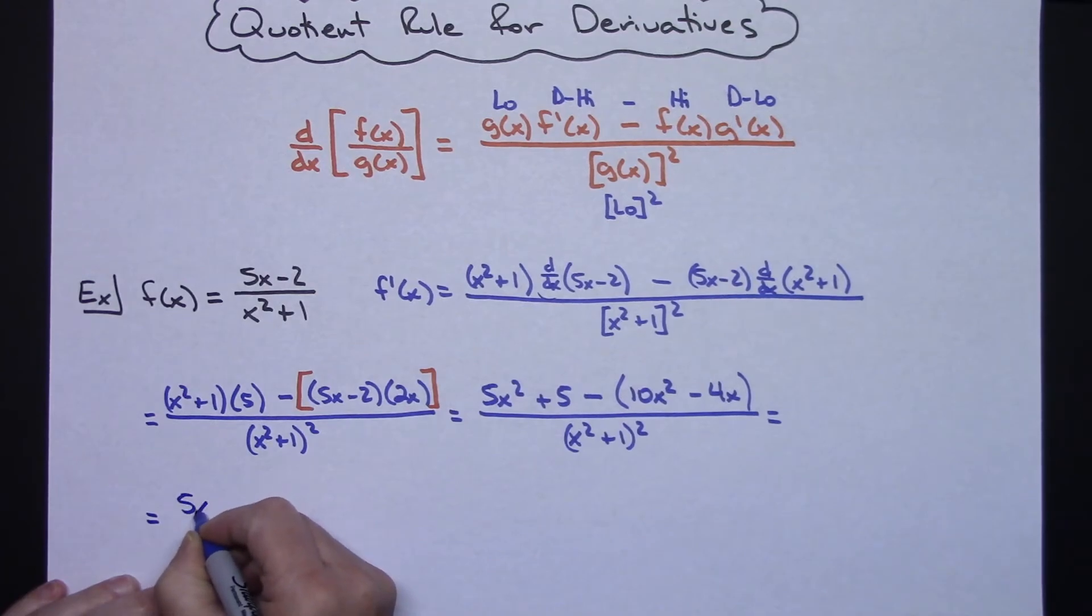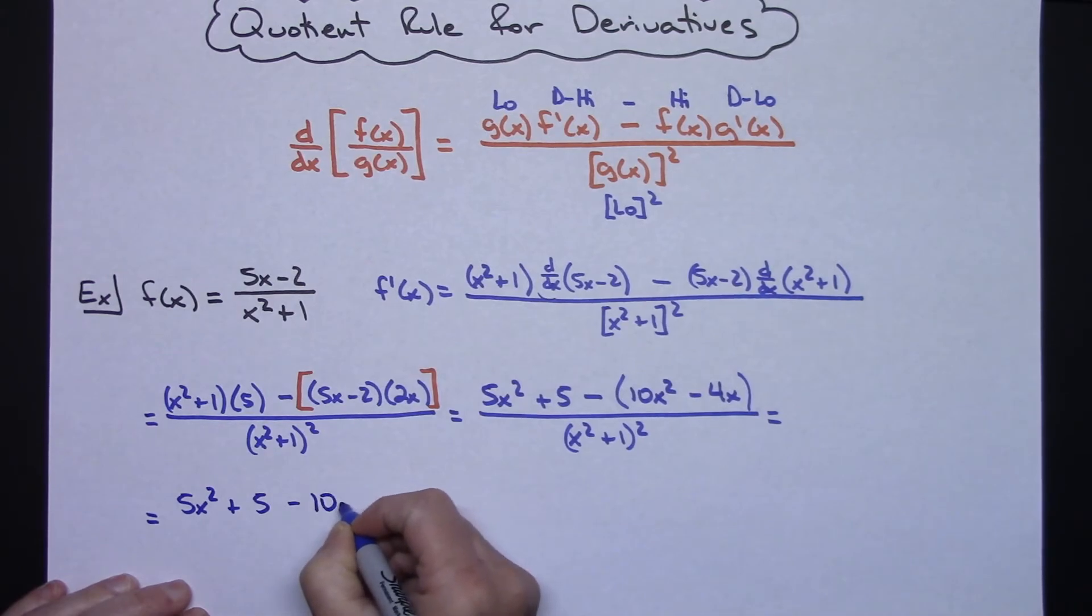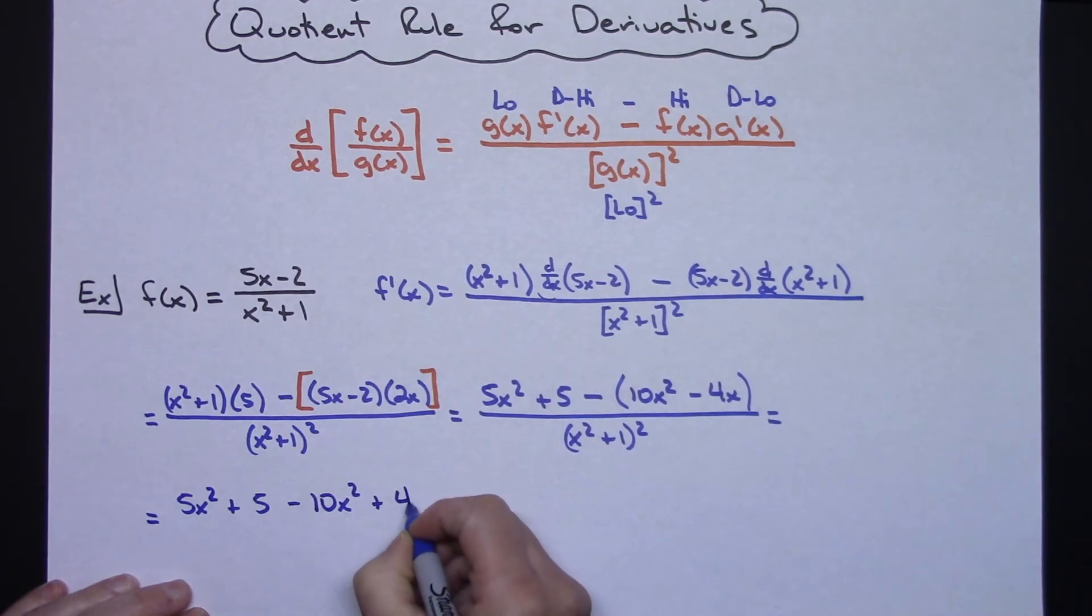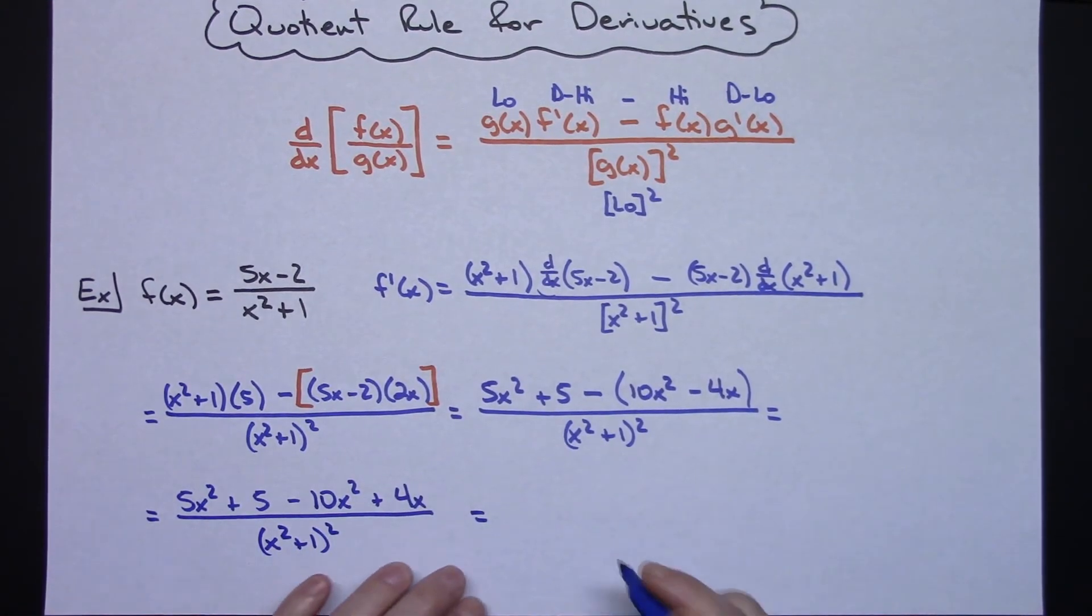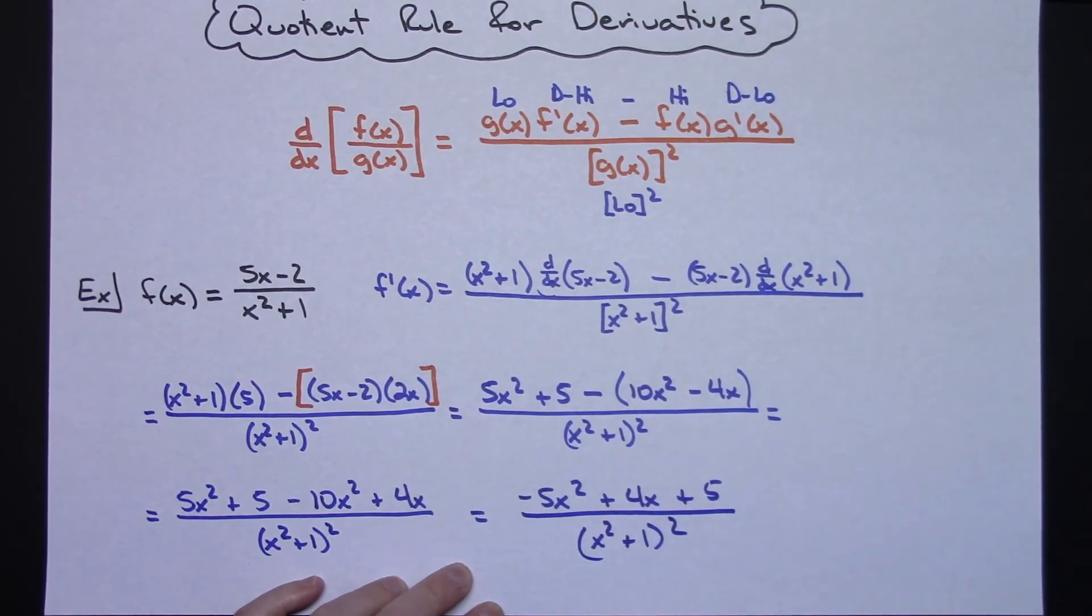Alright, so 5x² plus 5, and then let's go minus 10x², and then that's going to make that a plus 4x, all over (x² + 1). And then we've got some like terms there on the top that we can take care of. So -5x² plus 4x plus 5, just going in the right order there, and then (x² + 1) quantity squared for a final answer.